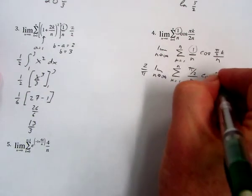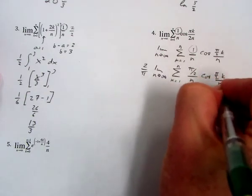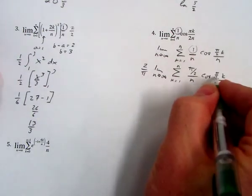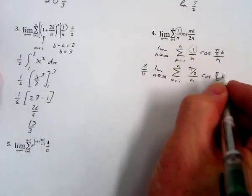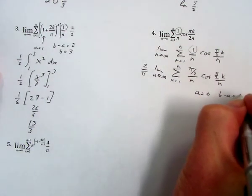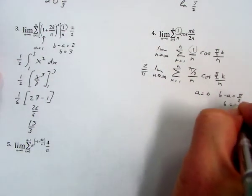So we have cosine of pi over 2k divided by n. Now we can see, since there isn't anything in front of this delta x part, a equals 0, b minus a is pi over 2, so b is pi over 2.